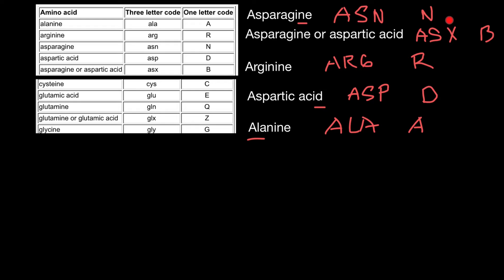Now we can move on to learn the three-letter and one-letter abbreviations of the next five amino acids. The first amino acid of the day is cysteine — and as you can see, there is only one amino acid that starts with C. So there are no special tricks needed. Now let's move to the four amino acids whose names start with G, where we need certain tricks because their one-letter codes are very different from the letter G.